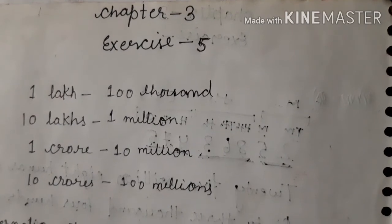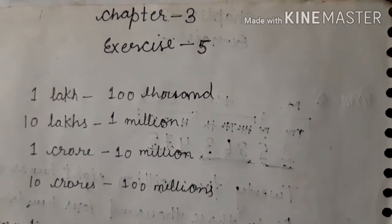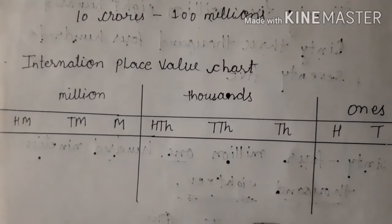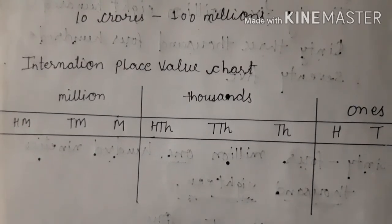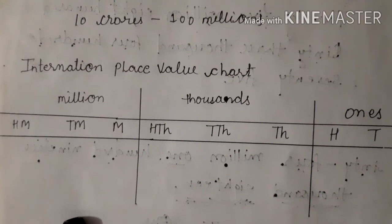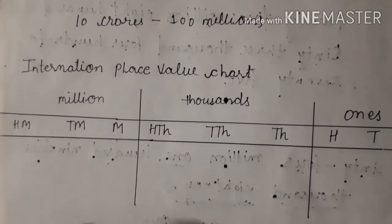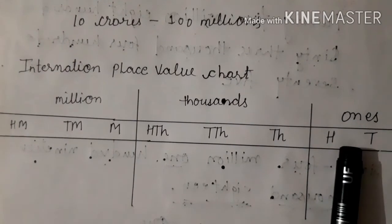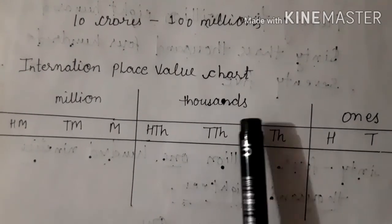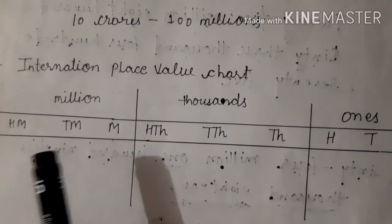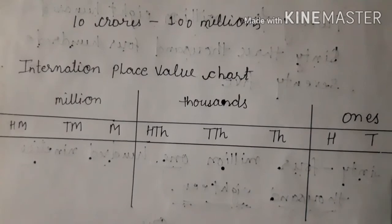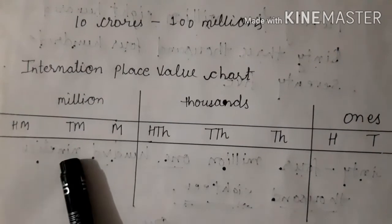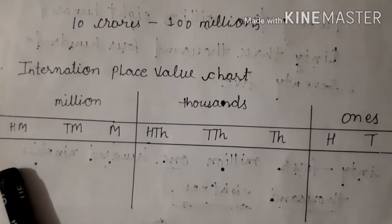Now let's look at the International Place Value Chart. From right to left, the first three places make the Ones period, the next three places make the Thousands period, and the next three places make the Millions period. International Place Value Chart में जो starting के three places हैं वो Ones period बनाते हैं, उसके next three places Thousands period बनाते हैं, और next three places Million period बनाते हैं। So the places are: Ones, Tens, Hundreds, Thousands, Ten Thousands, Hundred Thousands, Million, Ten Million, Hundred Million.